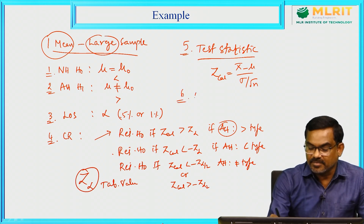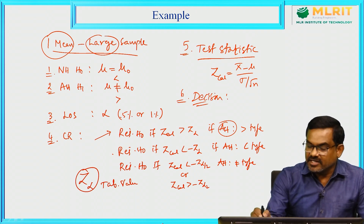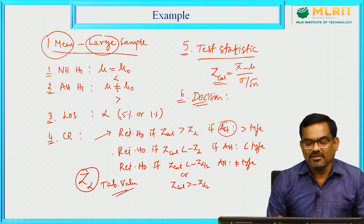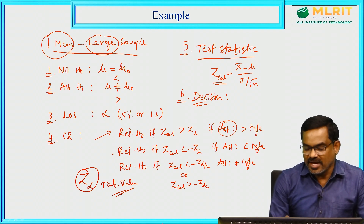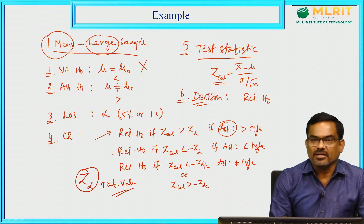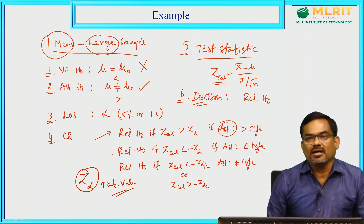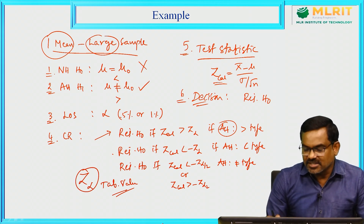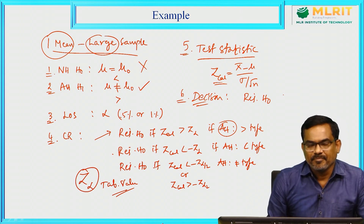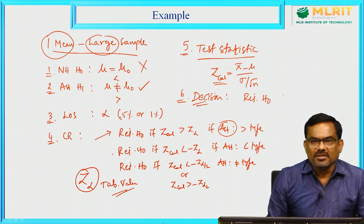In the last step — the decision — we compare the calculated value with the tabular value and take the final decision according to the conditions in step 4, specifying when to reject or accept H naught. If the decision is to reject H naught, we conclude that we accept the alternative hypothesis. If we accept H naught, that means we reject the alternative hypothesis. These are the steps involved in testing of hypothesis.